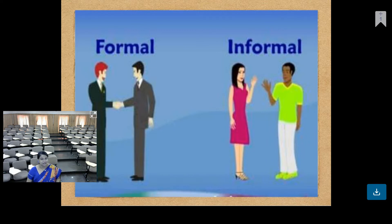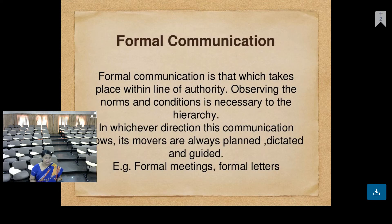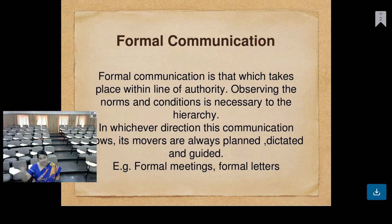Not only the words, but your dress code, body language, and appearance also talk a lot — that is why you have to take care of all those things in communication. So what is formal communication? Formal communication is that which takes place within the line of authority — between a teacher and student, a boss and subordinate, a manager and employee. That is called formal communication, which takes place within authority.